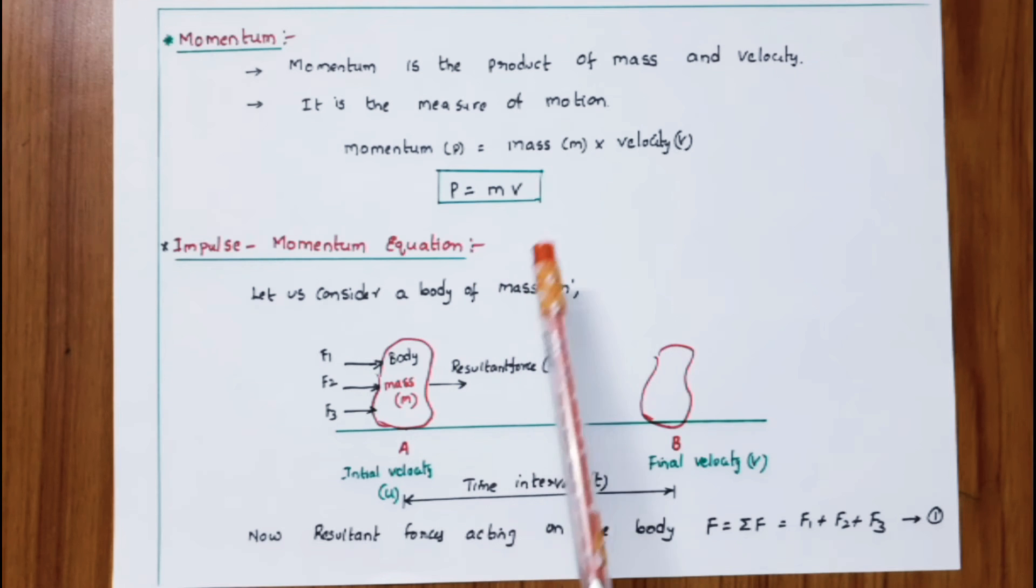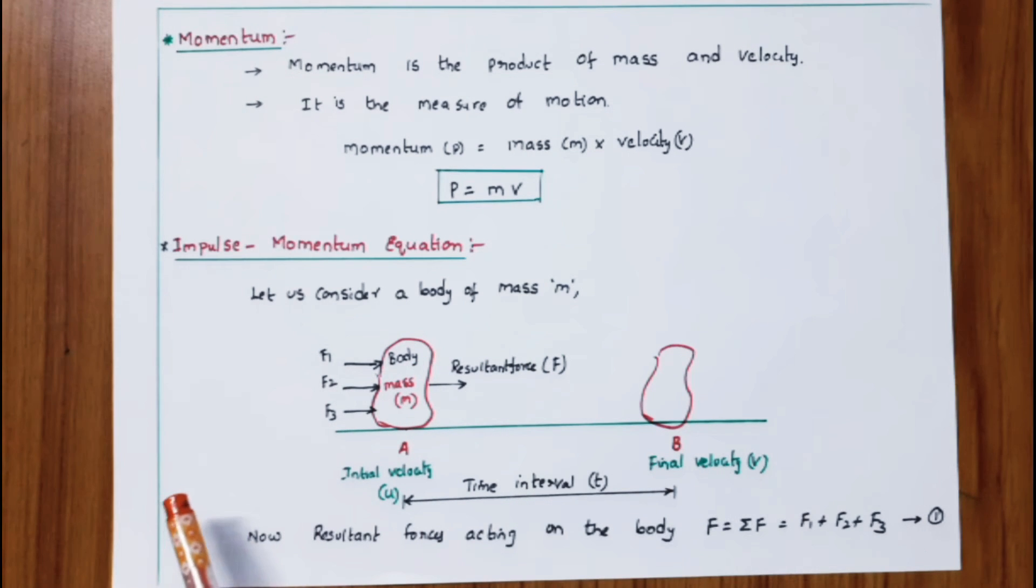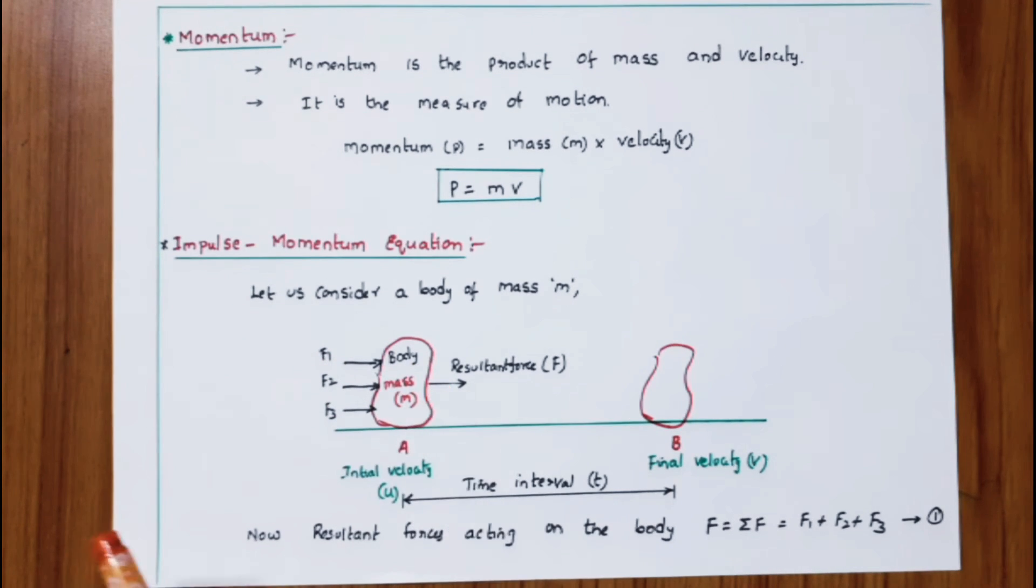For the impulse-momentum equation, let us consider a body of mass m. Applying a system of forces F₁, F₂, F₃ on the body, it moves from position A to position B with time interval t. The velocity at position A is u, and the velocity at position B is v.